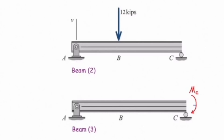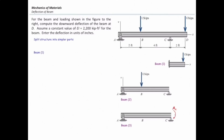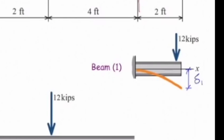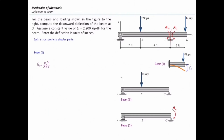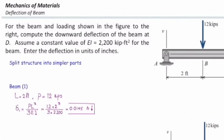First, the cantilever beam at the top. The deflection of that beam, delta 1, equals PL cubed over 3EI. The force is 12 kips and the length is the length of that cantilever beam — 2 feet, not the entire beam. Plugging in the values gives 0.0145 feet going downward because of the direction of the applied force. That is how I take care of the sign of deflections — be consistent with your sign convention.